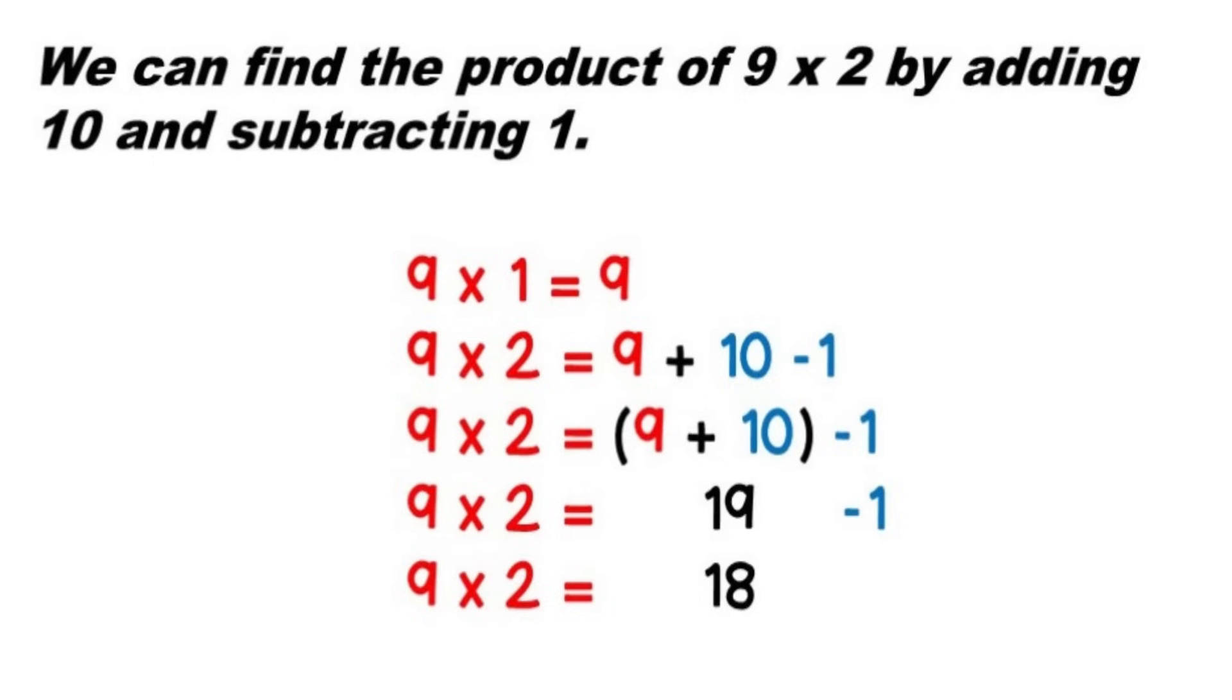The 9 equals 10 minus 1 strategy. We can find the product of 9 times 2 by adding 10 and subtracting 1 like this.